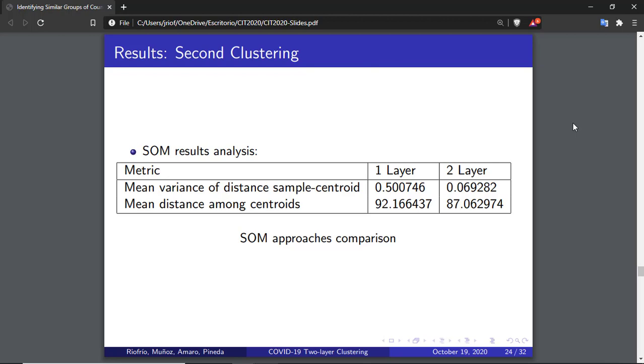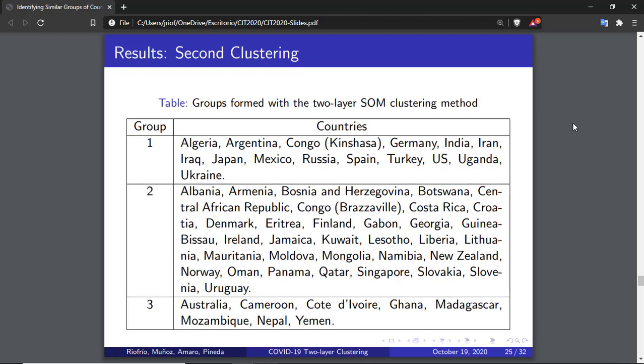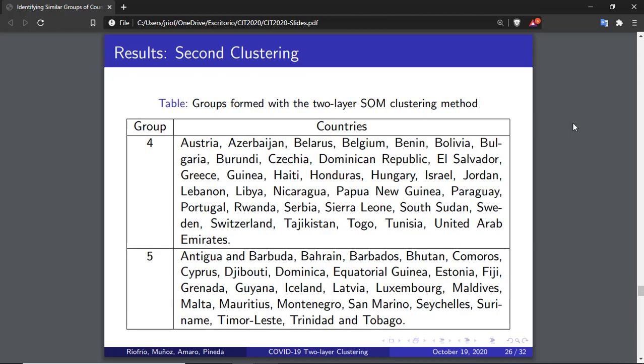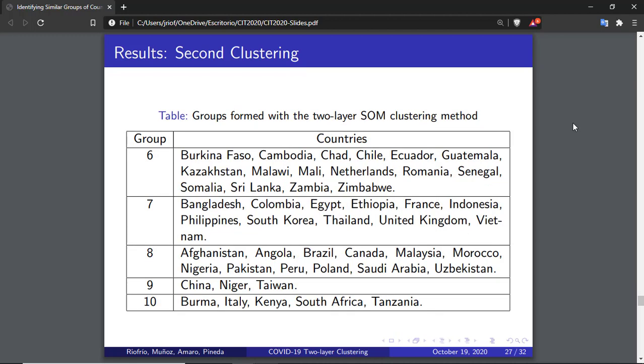When using SOM, the approach presented in this research minimizes the variance of the distance from each sample to their corresponding centroid. Yet, the centroids are slightly closer to each other in this approach. Comparing between clusters from one-layer clustering SOM and two-layer clustering SOM, we get an adjusted RAND index of 0.24. This is an indicator that both methods perform clustering in a completely different way. In the following three slides, the tables present the ten different groups formed with the SOM approach using the proposed method of a two-layer clustering. In this slide, we can identify groups 1, 2, and 3. This table presents groups 4 and 5. And finally, this slide shows groups 6, 7, 8, 9, and 10.